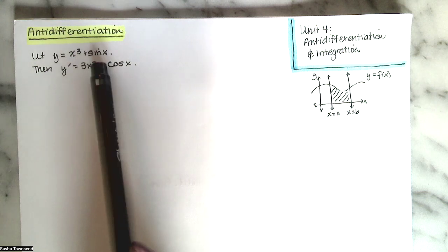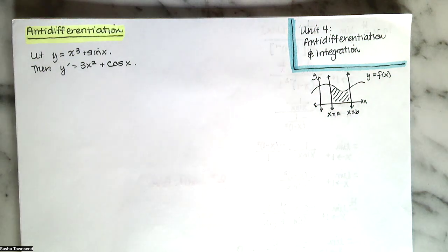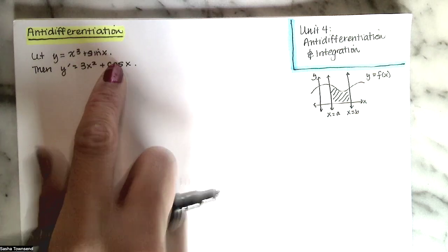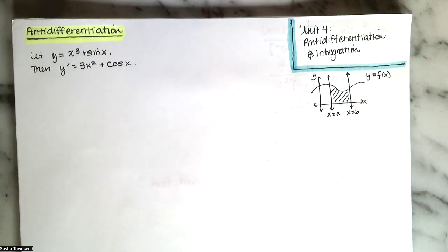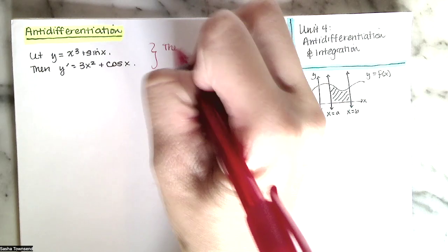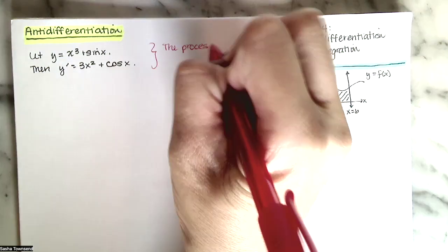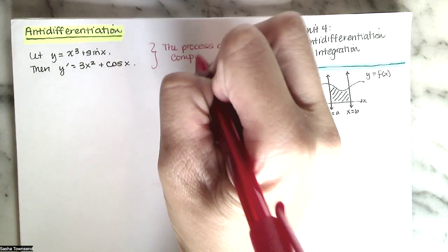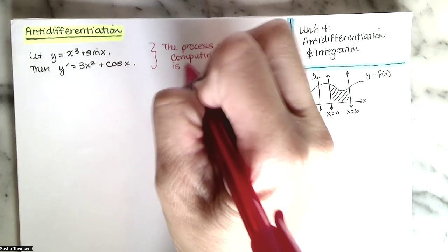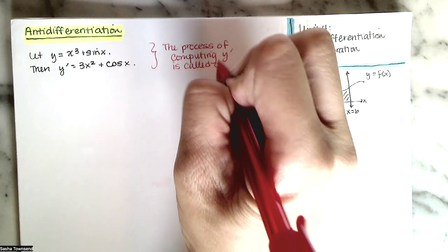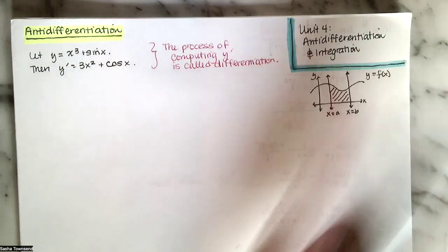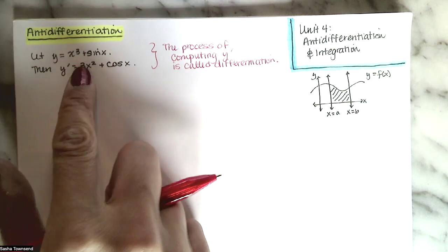Let's say we've got y equals x cubed plus sine of x. We can take the derivative: the derivative of x cubed is 3x squared, and the derivative of sine of x is cosine of x. That process is called differentiation — the process of computing a derivative. Anti-differentiation is doing that backwards.